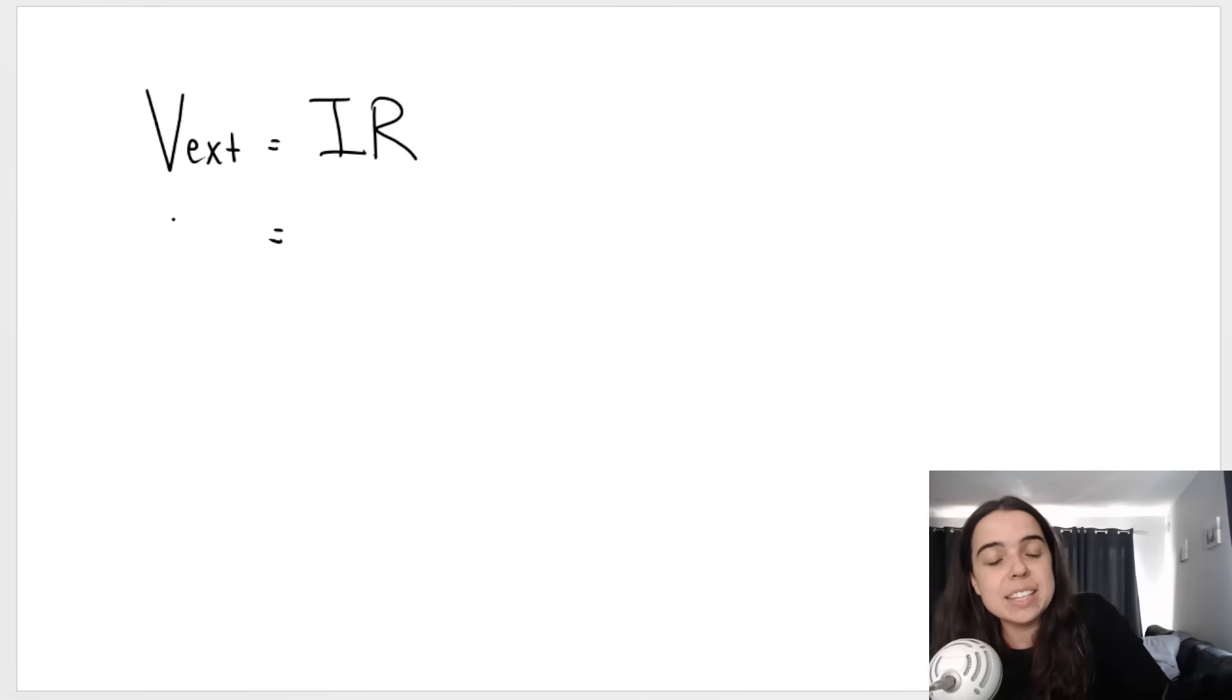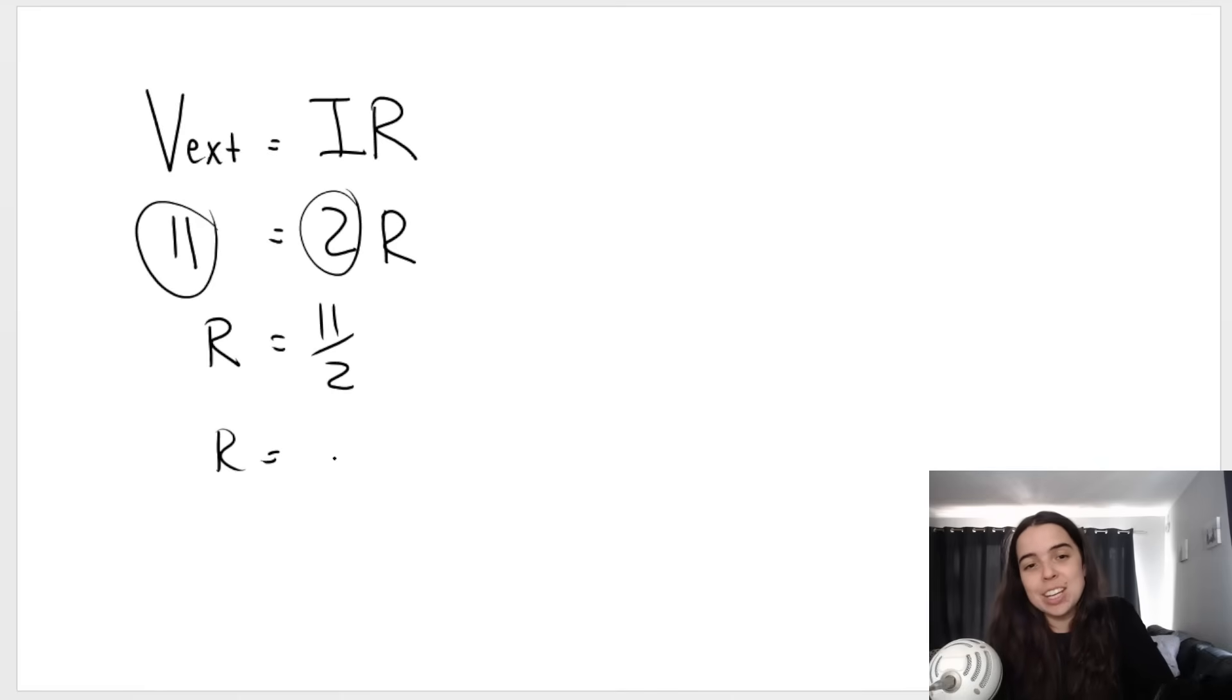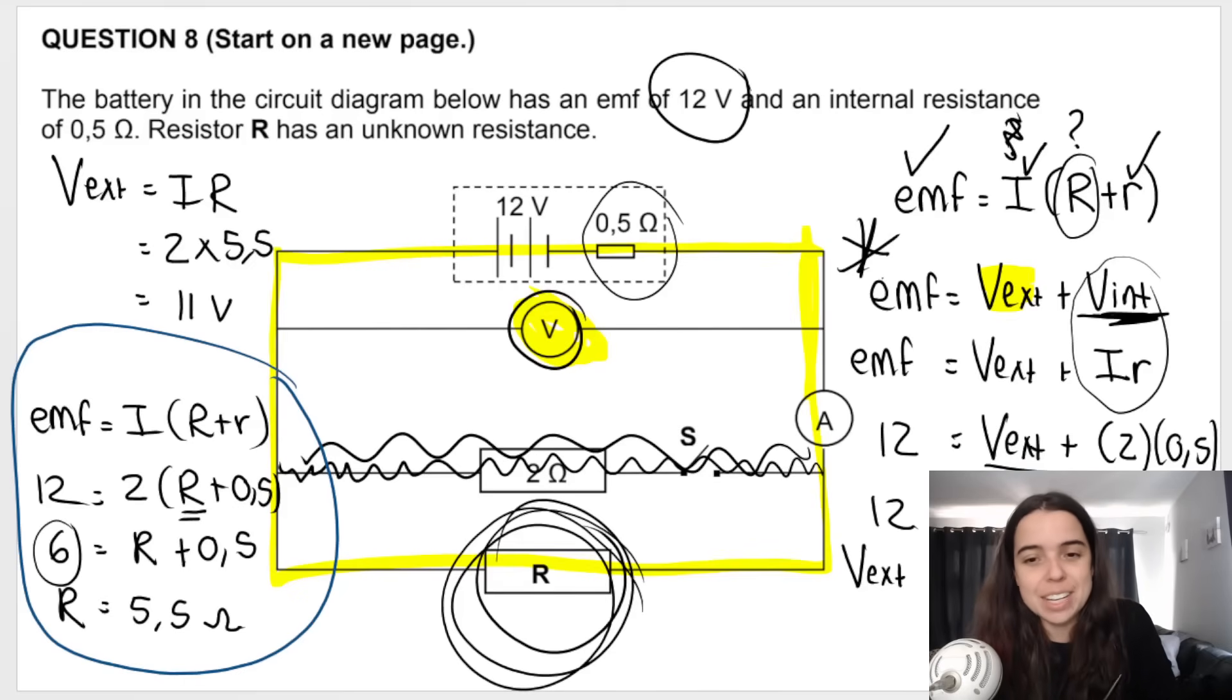So we just did our previous question. We worked out that V external is 11. From the question, I know that current is 2, and we're working out big R. Big R would be 11 divided by 2, which is 5.5 ohms. Remember, you must round off to two decimals. So that's why I said 5.5 ohms. And there we go. Or alternatively, as I mentioned, you could use this method, the EMF formula, because we know EMF, we know the current, they gave it to us, and we know baby R. We can get big R like that.